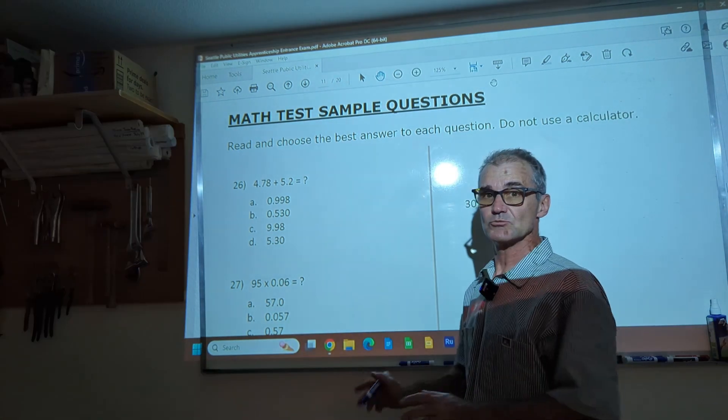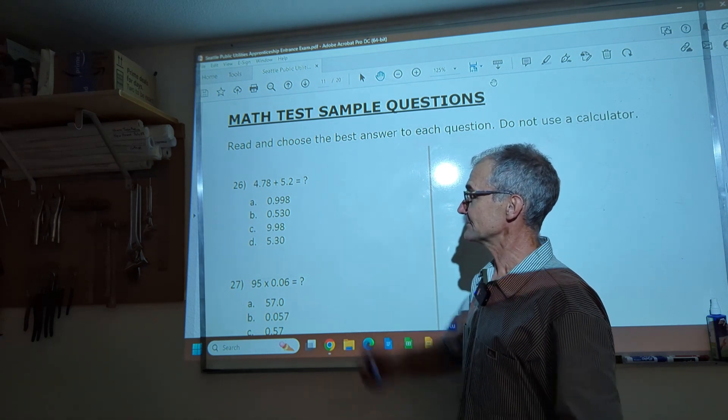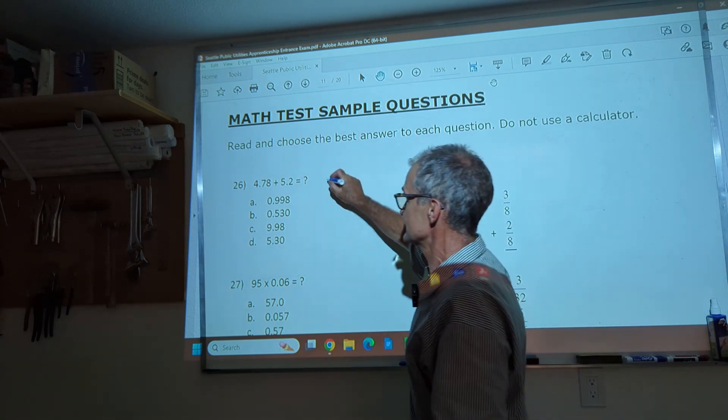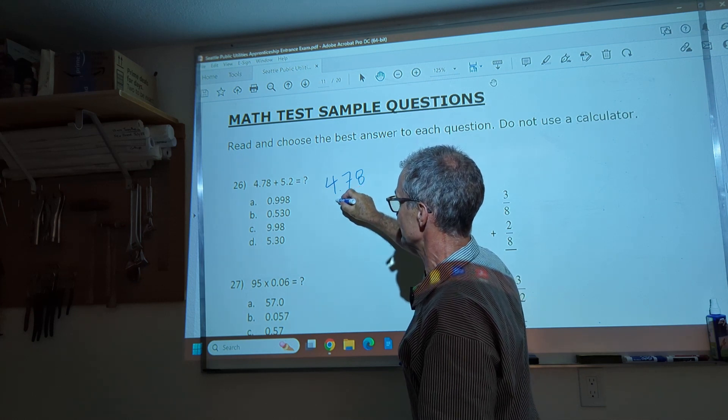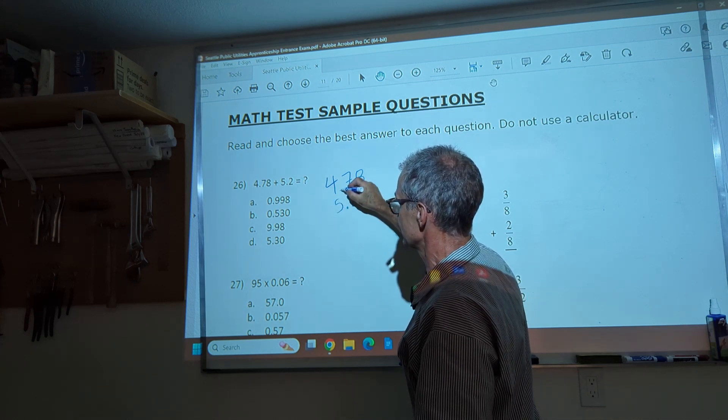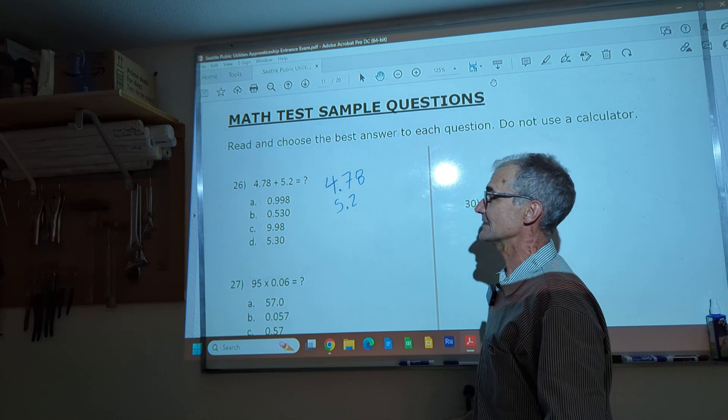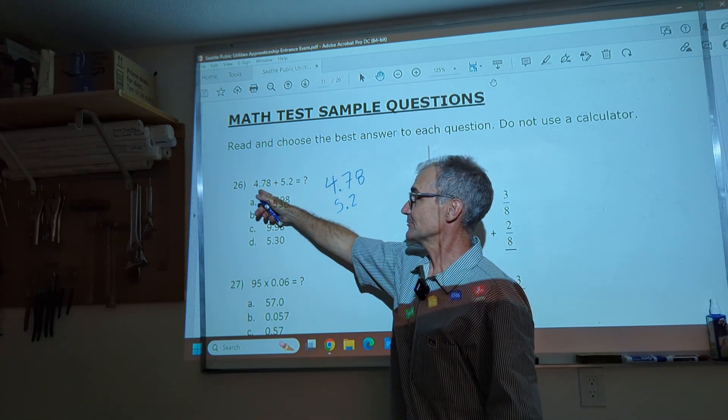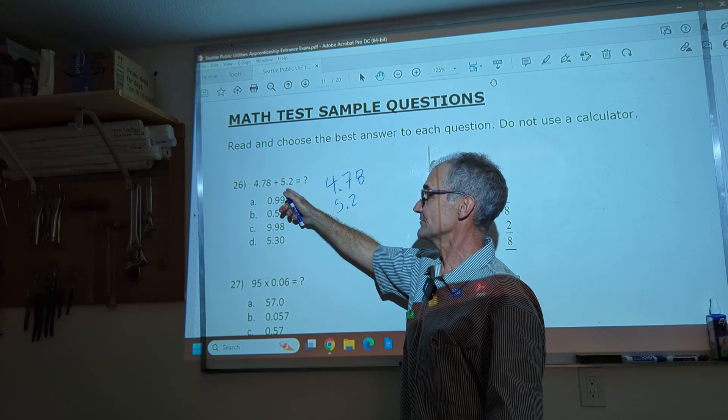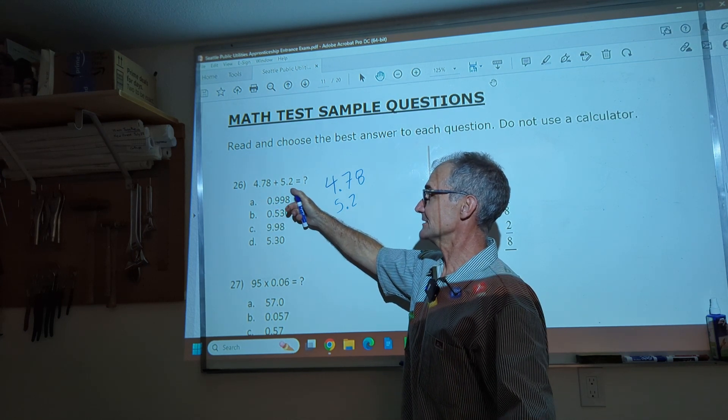Number 26 right here. The rule on adding decimals is you have to line up that decimal place. So I have 4.78 plus 5.2 and my decimal places are lined up. Before I even do this problem though, I might just want to look at it. I have a little bit more than four, a little bit more than five. That's going to be a fair bit more than nine.